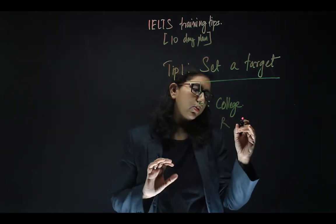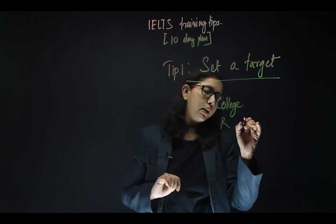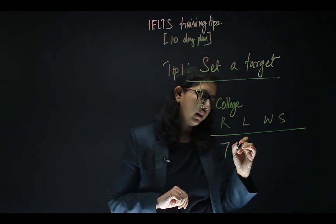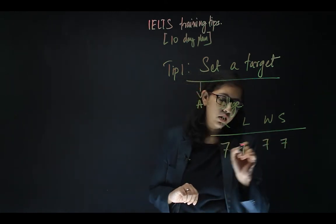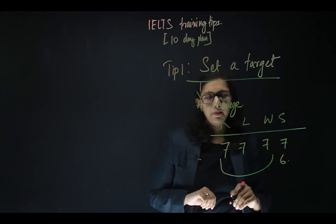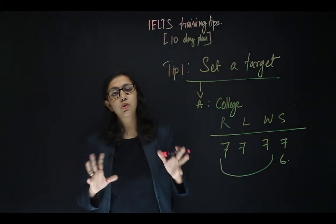They might ask you to get reading, listening, writing, and speaking scores that might be in the range of band seven, or in some cases a combination of band seven and six, depending again on the course that you're approaching.